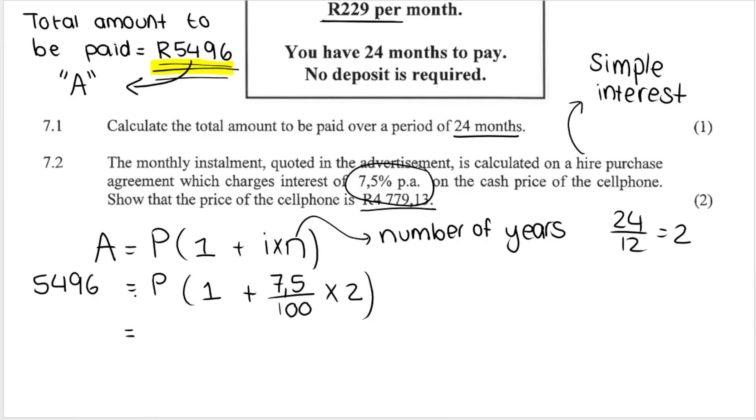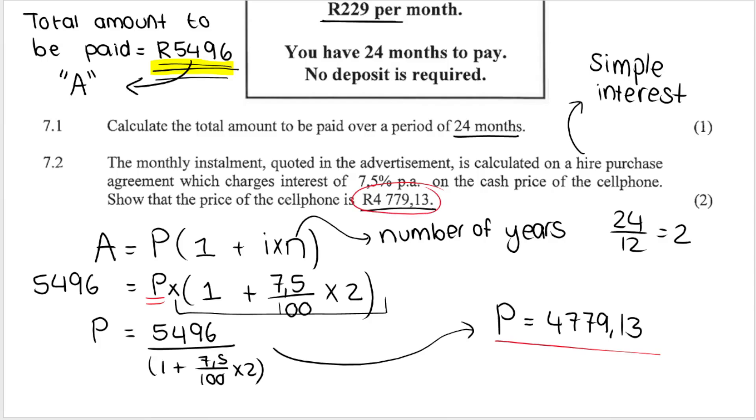When I do this, remember, I'm looking for P. I'm solving for P. I want to get P alone. Now, how do we get P alone? P is being multiplied by the bracket. So to get P alone, we need to do inverse operations. Because it's being multiplied by the bracket on this side, we have to divide by the bracket. So it's 5496 divided by the brackets. That's what you type into your calculator. And what you end up getting is exactly the amount that the question asked us to show. They said, show the price of the cell phone is this. In other words, show that the starting amount of the cell phone before we add interest is this. And that's exactly what we did over there.